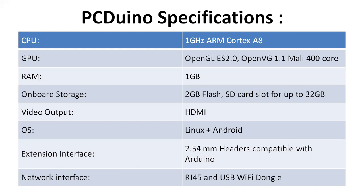The PCDuino CPU is a 1 GHz ARM Cortex-A8, compared to the Raspberry Pi's 500 MHz processor. The GPU supports OpenGL. RAM is 1 GB, compared to the Raspberry Pi's older 512 MB (which has since been updated to 1 GB as well). The PCDuino has also been updated accordingly.